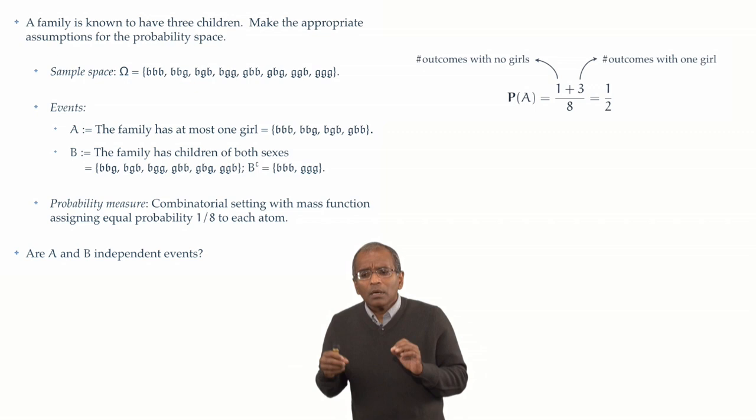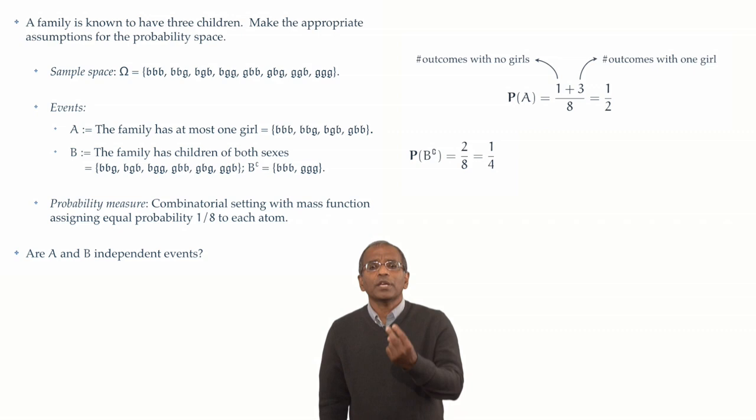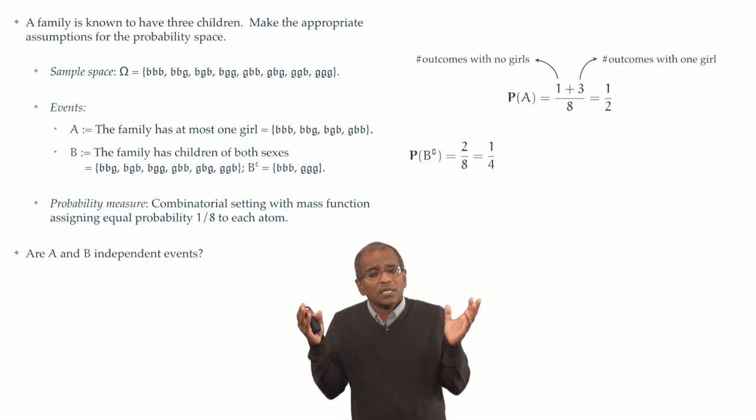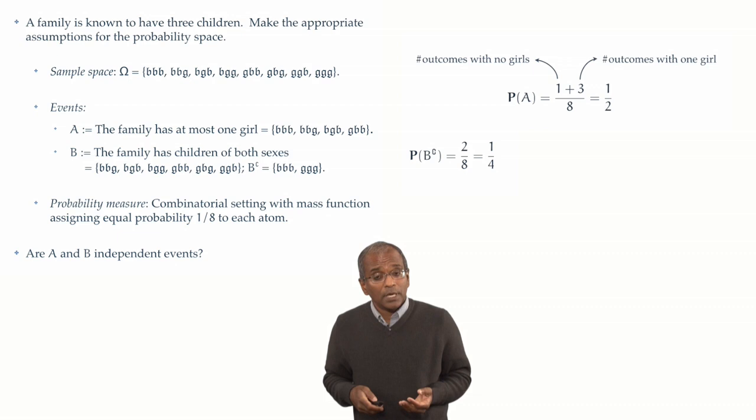And therefore there's a 1 plus 3 or 4 possibilities which trigger the event A. We find that A has got a chance exactly 1 in 2. So far so good. What about the event B? Well, it is easier to look at the complement of B where the children are all of one gender. There are two possibilities for the children of being of one gender, all boys or all girls. Out of 8, therefore, there's a 1 in 4 chance that the complement of the event B occurs. And therefore, by additivity, the chance of B occurring is 1 minus 1 in 4 or 3 in 4.